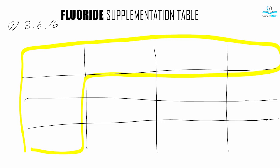I'm going to write 6 over here and then 3 — I know it's counterintuitive, but trust me, this is what we have to do. And then after that, 3 and 6 — take the last number first — then 6, take the last number 6, and then 16. That means: 6 months to 3 years, 3 years to 6 years, and 6 years to 16 years.